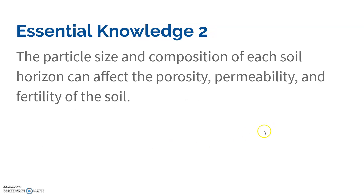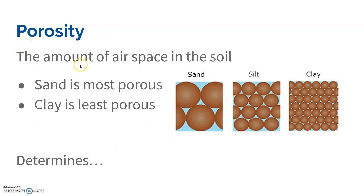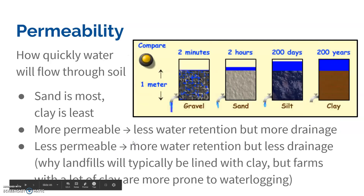Especially in very sandy soil, the particle size and composition of each soil horizon can affect the porosity, permeability, and fertility of the soil. Porosity is the amount of air space in the soil. Porosity is highest in sand — there are really big air spaces — whereas the spaces between clay particles are very small, so clay is the least porous. That determines permeability: with bigger spaces it's much easier for water to flow through, so sand is the most porous and most permeable, and clay is the least porous and least permeable.